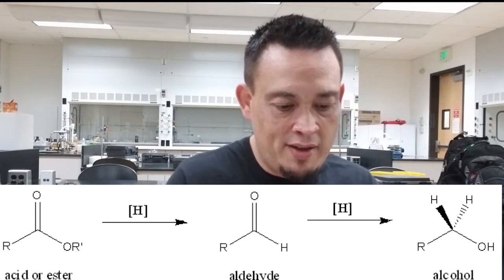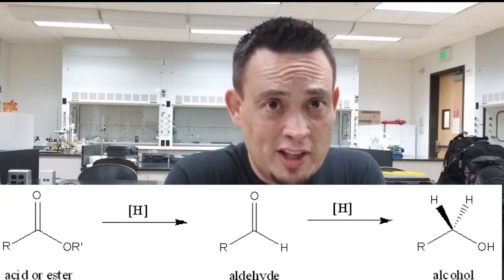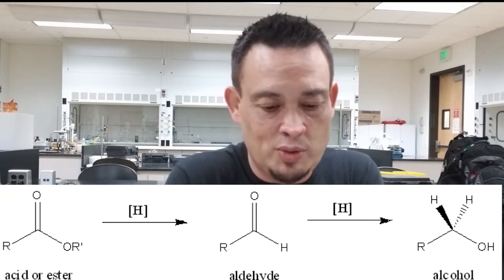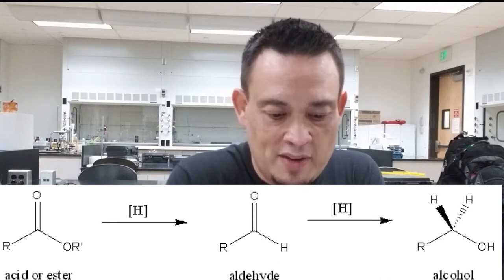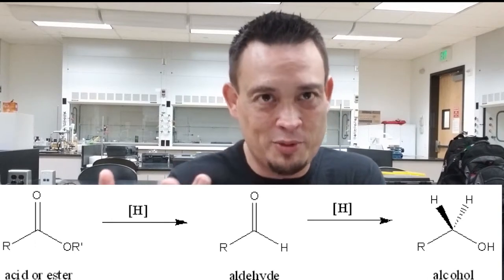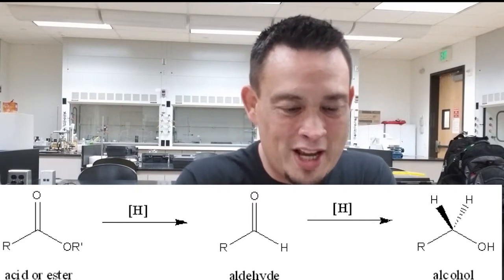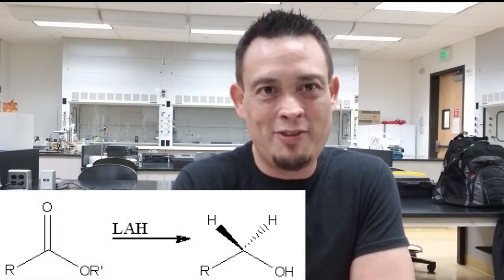If you have an acid or an ester and you do a reduction, the carbon that's part of the ester is going to gain a new bond to H. We then get an aldehyde, and if you reduce it again it goes to two bonds to H on that carbon — meaning with additional reduction we get an alcohol. There is a barrier in what kind of reagents we can use for each step: trying to reduce an acid or ester, that carbon is too oxidized for sodium borohydride, which is too weak, so you have to use lithium aluminum hydride — LAH.